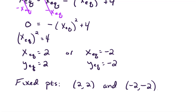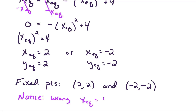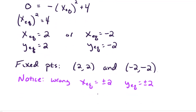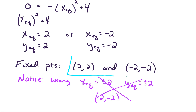Notice it would be wrong to say x_eq equals ±2 and y_eq equals ±2, because that would imply that (2, −2) is a fixed point, which is definitely not the case — x and y have to be equal. So we write our answer as ordered pairs, (2, 2) and (−2, −2), because that clarifies what we mean.